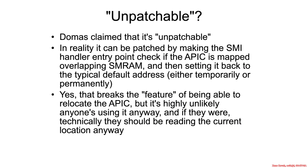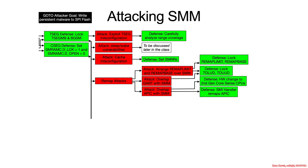I disagreed with the claim that this was an unpatchable vulnerability. A system management interrupt handler could check immediately upon entry into SMM whether the APIC has been overlapped with the SMRAM range, and either crash out or relocate the APIC back to a sane memory range. It would break the feature of being able to relocate the APIC, but not many people were actually using that as intended, and even if they were, they should have been checking for overlap. This is just another example of a clever use of remapping to access SMRAM when you're not supposed to.